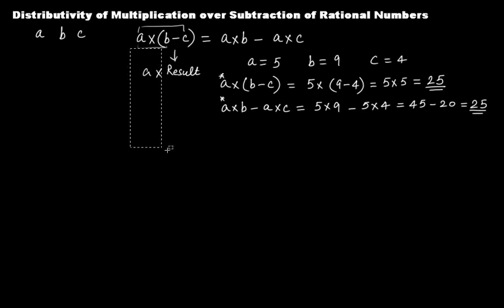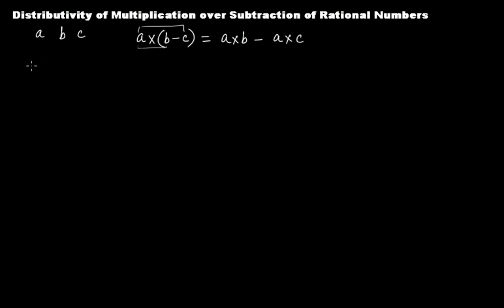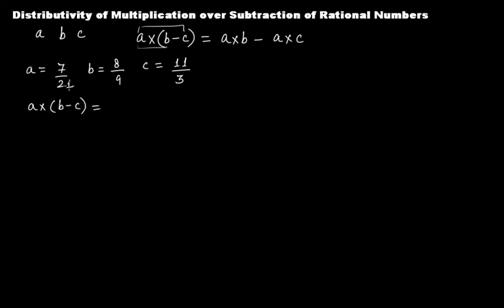Let's quickly take an example with rational numbers. Let a = 7/21, b = 8/9, and c = 11/3. Now let's compute a times (b minus c): that is 7/21 times (8/9 minus 11/3).